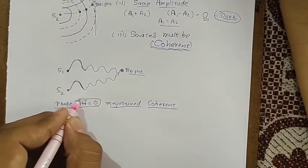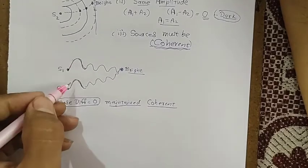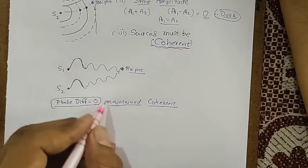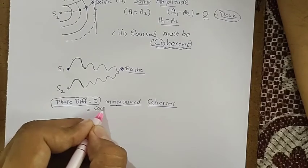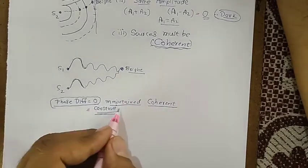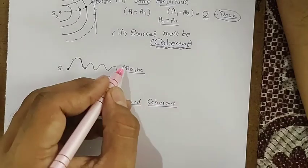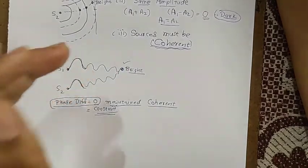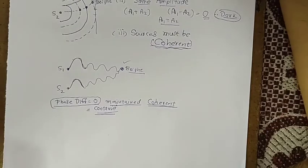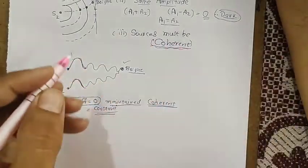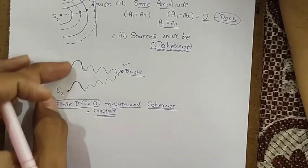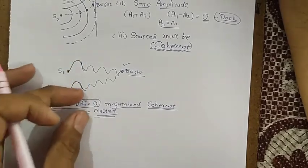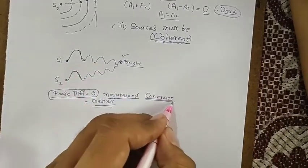It is not compulsory that phase difference should be zero only. Whatever phase difference exists — zero, 180 degrees, or anything — it must remain constant. Then bright and dark points will be maintained. Coherence means whatever phase difference exists between the waves released by the sources, that phase difference must be maintained. Such sources are called coherent sources.